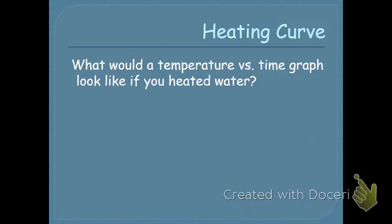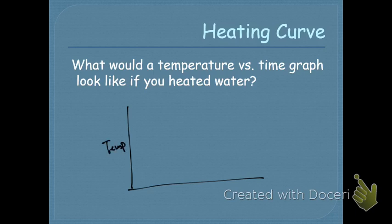All right, so we're going to talk about heating curves. This is the last topic prior to the test. Heating curves are a little strange because they don't do what you think they would. So let's take an example of water. If you're heating it up, you might expect the graph — temperature on one axis and time on the other — to just show the temperature increasing as time increases. But there's more going on, and we're going to talk about why the curve looks a little different and what's happening at each section.